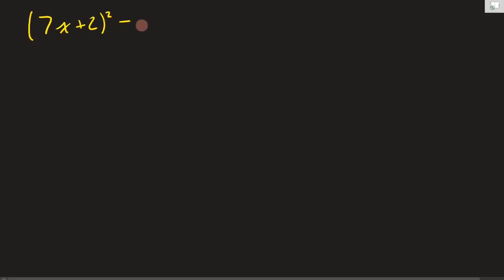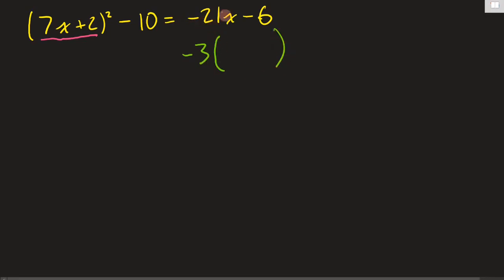Let's try another example: (7x + 2)² - 10 = -21x - 6. If we're going to use binomial replacement, it would be nice to find 7x + 2 inside the right hand side. Sure enough, 7 times 3 is 21 and 2 times 3 is 6, and the negative signs work too. So if we factor a negative 3 from -21x - 6, negative divided by negative gives positive 7x, and negative 6 divided by negative 3 gives positive 2. So we have 7x + 2 on both sides of our equation.